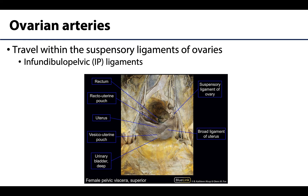The ovarian artery will supply the ovaries. The artery descends from the abdomen, and at the pelvic brim it will cross the external iliac artery to enter the true pelvic cavity. From this point it travels within the suspensory ligament of the ovary, otherwise known as the infundibulopelvic or IP ligament. This is a peritoneal ligament continuous with the mesovarian portion of the broad ligament of the uterus. The ovarian artery supplies the ovaries as well as a portion of the distal uterine or fallopian tubes, and anastomoses with the uterine artery.